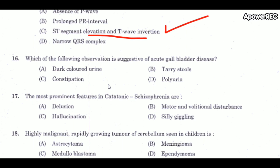Next question: which observation is suggestive of acute gallbladder disease? The correct answer is dark-colored urine. Cholecystitis is inflammation of the gallbladder. Clinical manifestations include progressive right upper quadrant or epigastric pain, mild fever, anorexia, hyperbilirubinemia, and increased serum alkaline phosphatase.